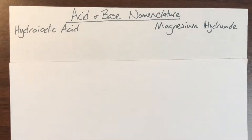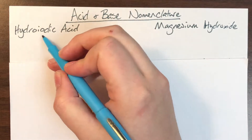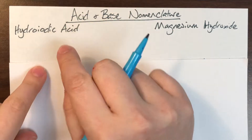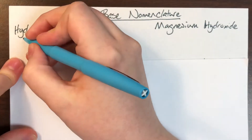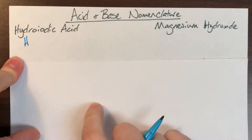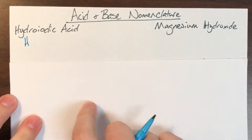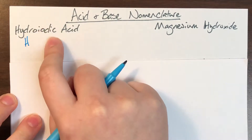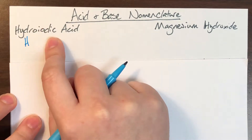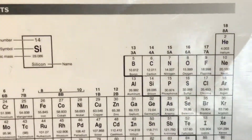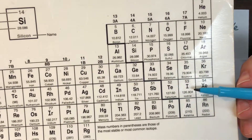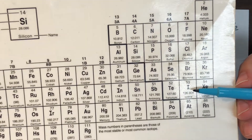We're going to be practicing acid-base nomenclature today. My first compound is hydroiodic acid. Both the word 'acid' and the prefix 'hydro' tell me that I'm going to be leading with a hydrogen. The 'hydro' tells me that 'iodic' is going to come directly from the periodic table. Iodic is going to be iodine's name in acid form.